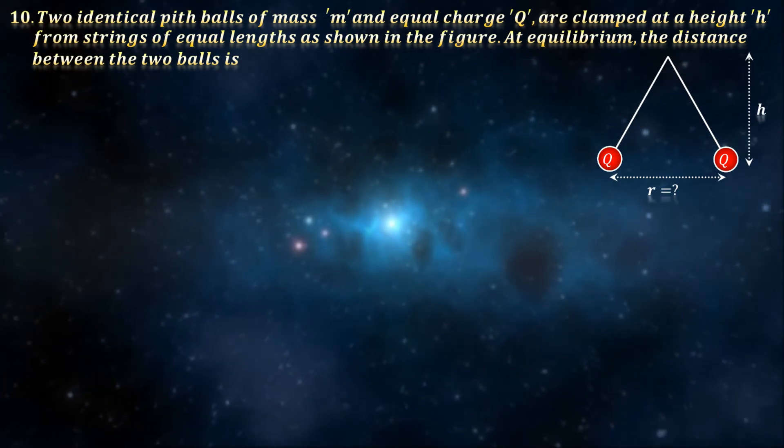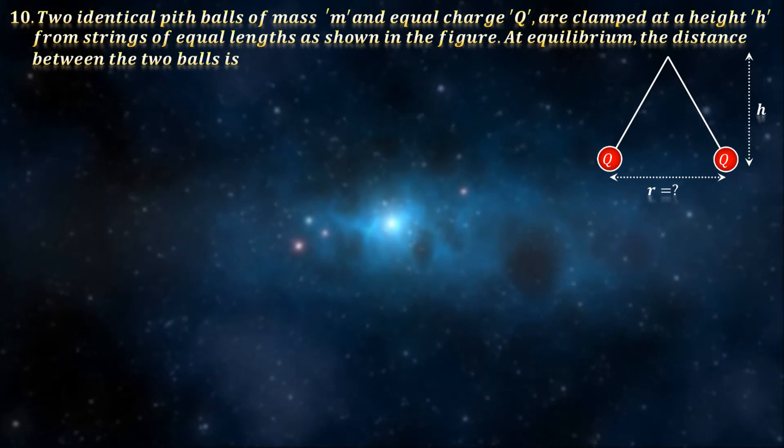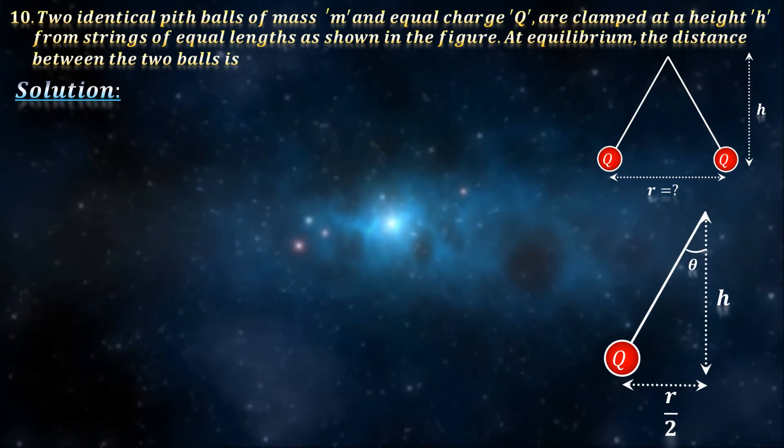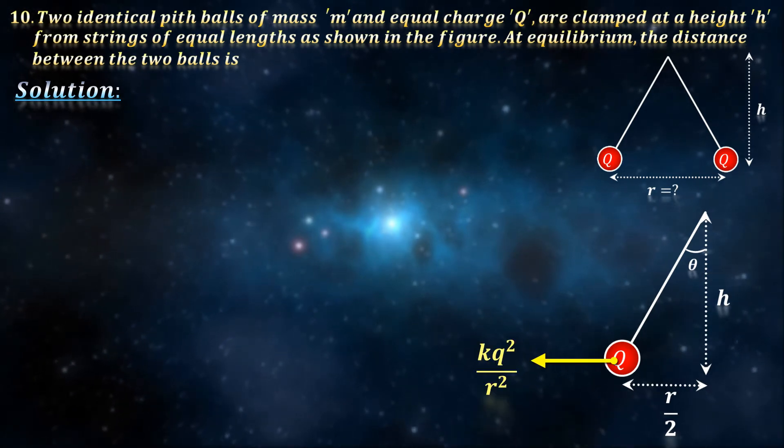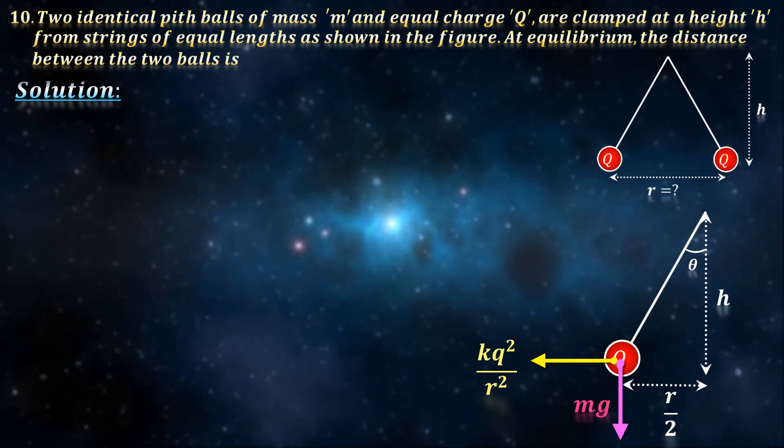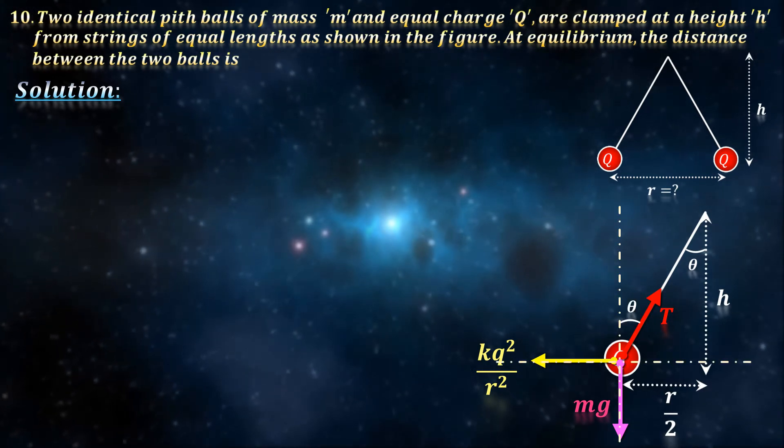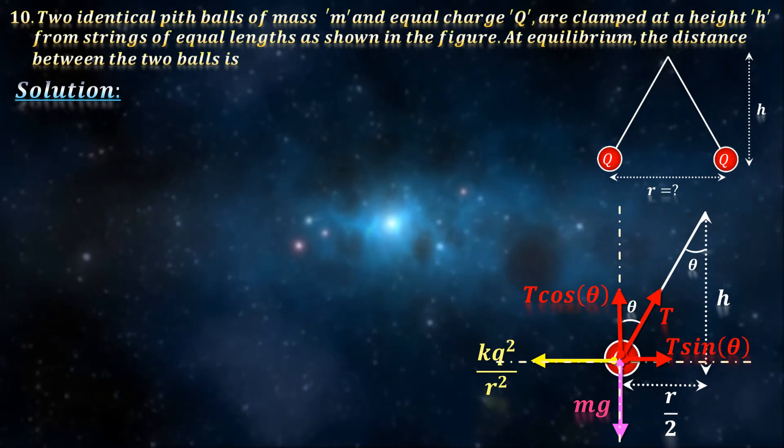The solution is on similar lines as before. Alright, let's begin. We chop this picture into half as well, and then write down the forces. The Coulomb's force, mg, and tension. They must all cancel out, so we resolve the tension along the horizontal and vertical just like before.